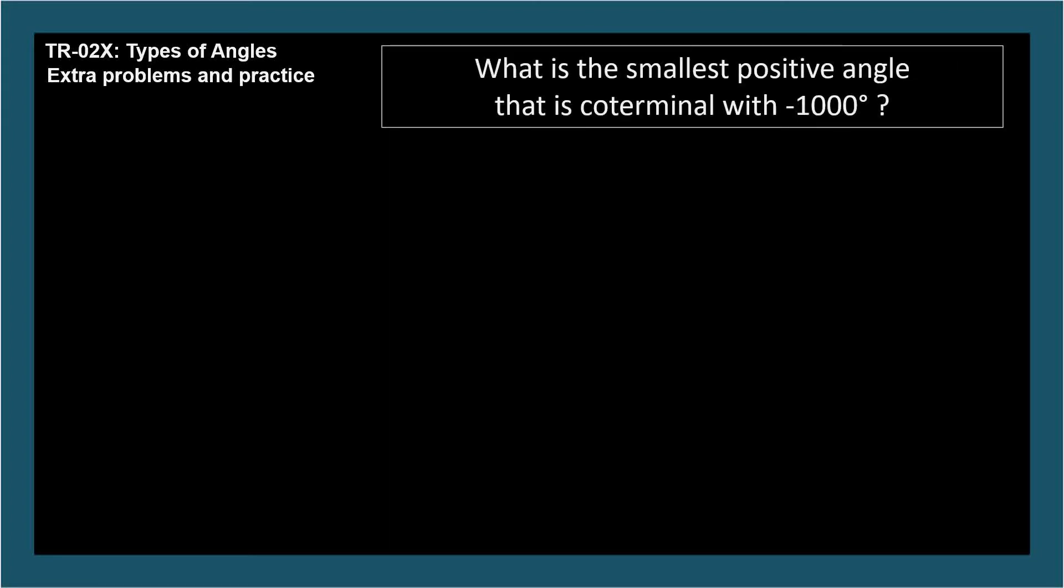What's the smallest positive angle that's coterminal with negative 1,000 degrees? Coterminal angles are 360 degrees apart, so the way to solve this problem is to add 360 degrees to negative 1,000 until we get a positive number.